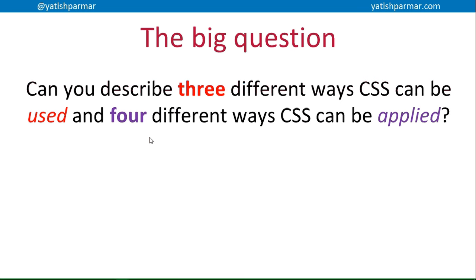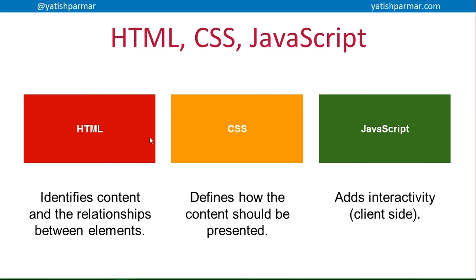This video covers three different ways CSS can be used and four different ways it can be applied within a document. Remember the historical perspective: HTML was created to identify content on a page and provide structure, describing what the information actually is. With HTML 3, they introduced things like the font and color tags, which created an absolute nightmare for web designers having to style hundreds of thousands of individual elements across hundreds of web pages. So the W3C brought out CSS — Cascading Style Sheets — as a solution, because CSS is used to define how content should be presented.